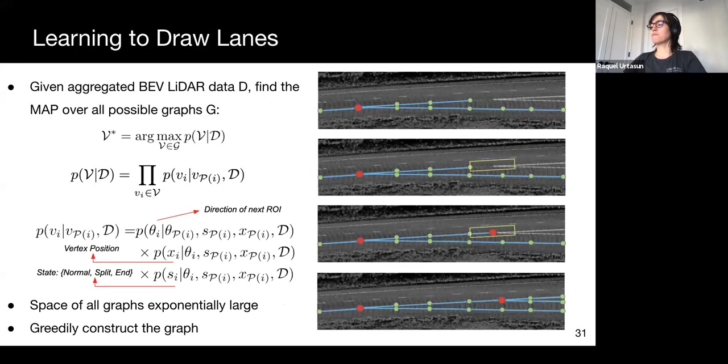We formulate the problem as discovery and inference in a directed acyclic graphical model, a DAG, where the nodes correspond to geographic and topological attributes. Given a temporally aggregated lidar point cloud projected onto bird's-eye view, we aim to find the maximum a posteriori probability over all the possible DAGs that could describe the road. The probability distribution of each DAG can be factorized as the product of the probability distributions of its vertices, and each vertex conditioned on its parents. Each vertex is a random variable with the following three attributes: the direction of this vertex given the parent vertex, the geometrical position of the vertex, and the topological state of the vertex as in no change, fork, merge, and stop drawing. The space of the possible graphs is exponentially large, so we recursively reconstruct the graph and compute the geometric and topological properties of each vertex.